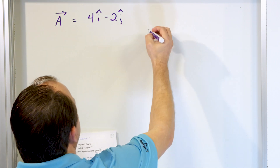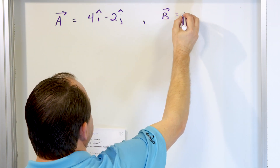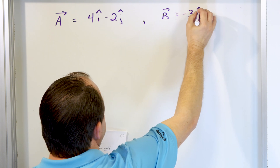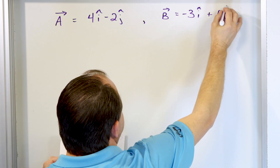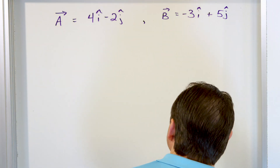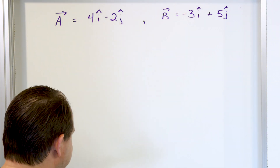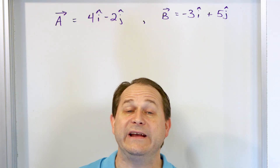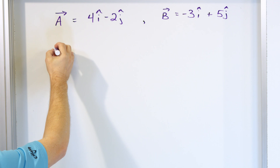Along with that, we're also told that vector B is negative 3i plus 5j. Now what we want to do is form vector C, because Part A says write vector C in component form, so we have to figure out what vector C is.